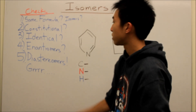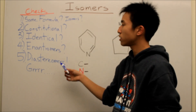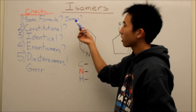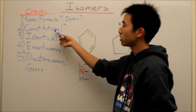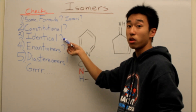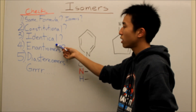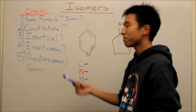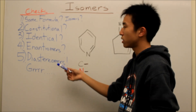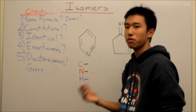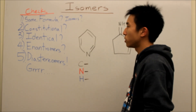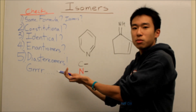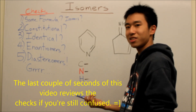Next are diastereomers. These are basically like leftovers — so if they're not constitutional isomers, not identical molecules, and not enantiomers, then they must be diastereomers. The reason I left them for last is because they're the hardest to identify, so if you just check off that they're not any of the others, then they have to be diastereomers. Nice and easy.